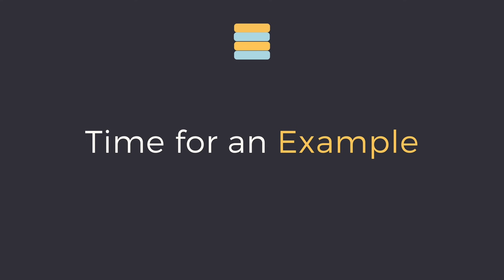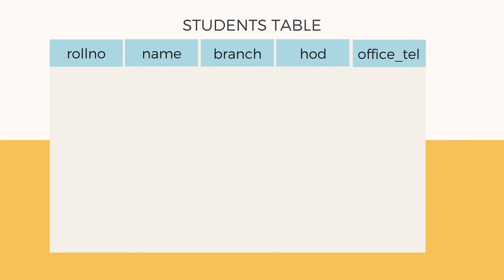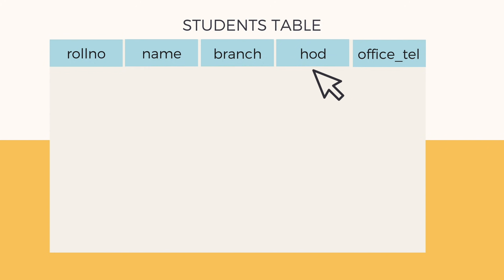Let's start with a very basic example and try to understand data redundancy and the problems we face due to it. Here we have a simple student table to store student information in a college. We have columns: roll number, student name, the branch or department name, the name of the HOD or head of the department, and the department telephone number.